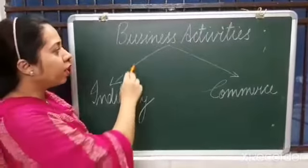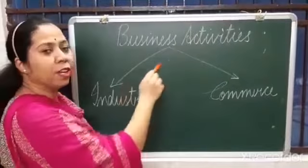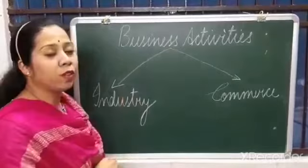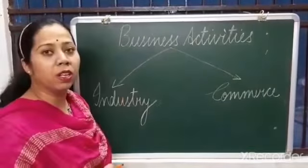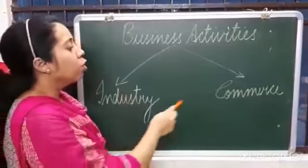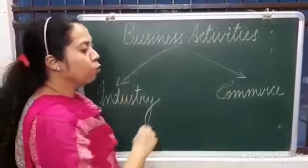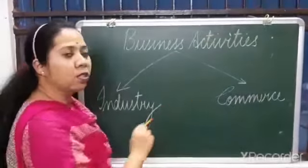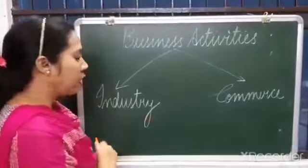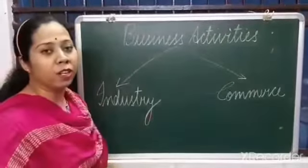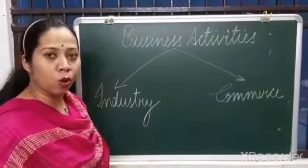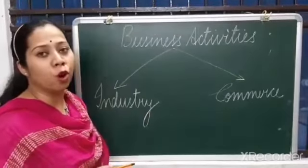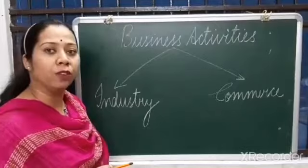Hello students, we are doing the classification of business activity. In the previous video, we completed the classification of industries. Today we are going to do the classification of the other part, that is commerce. We will briefly revise the definition of industries: industries includes all those activities which involve conversion of raw material into finished goods.